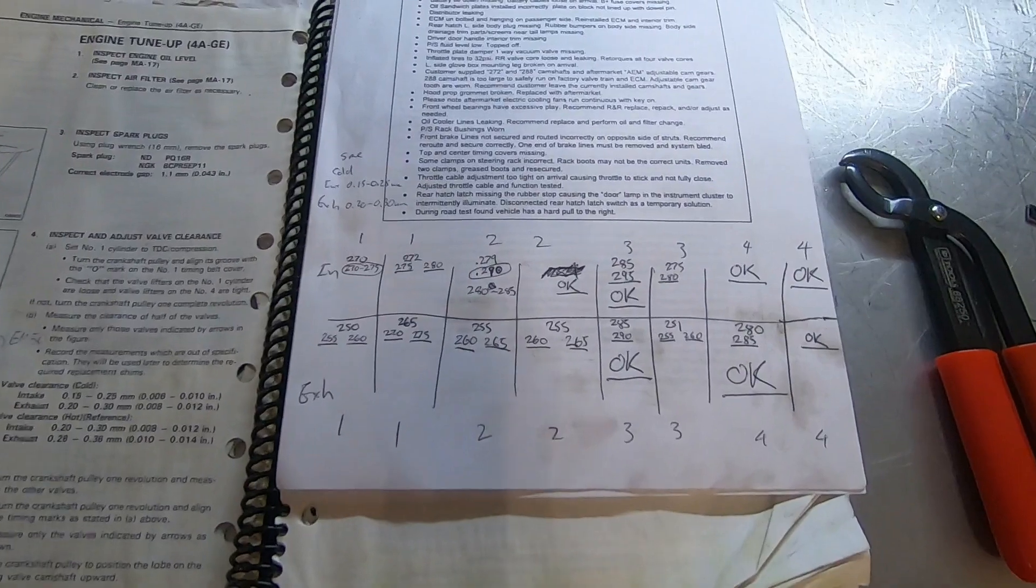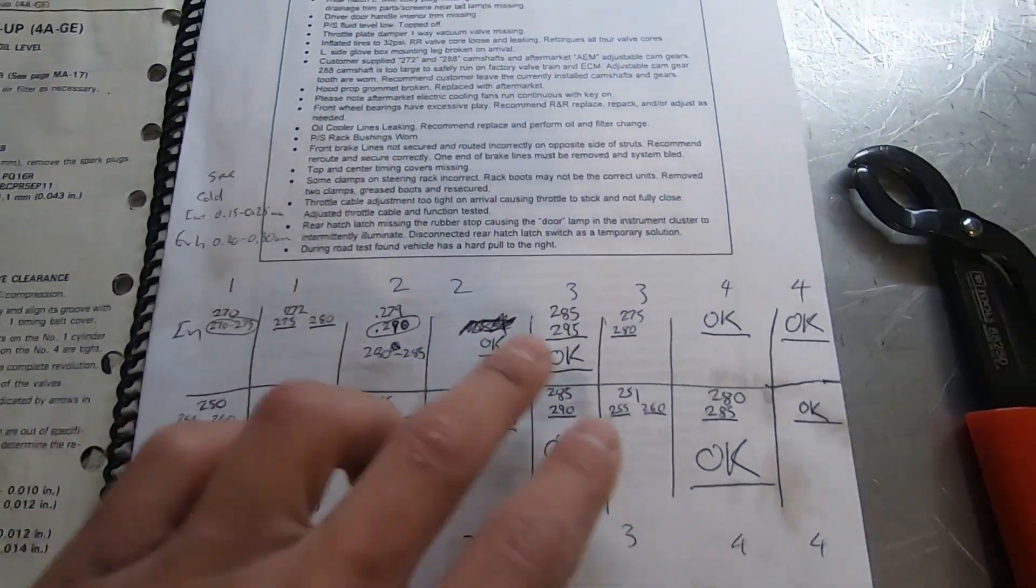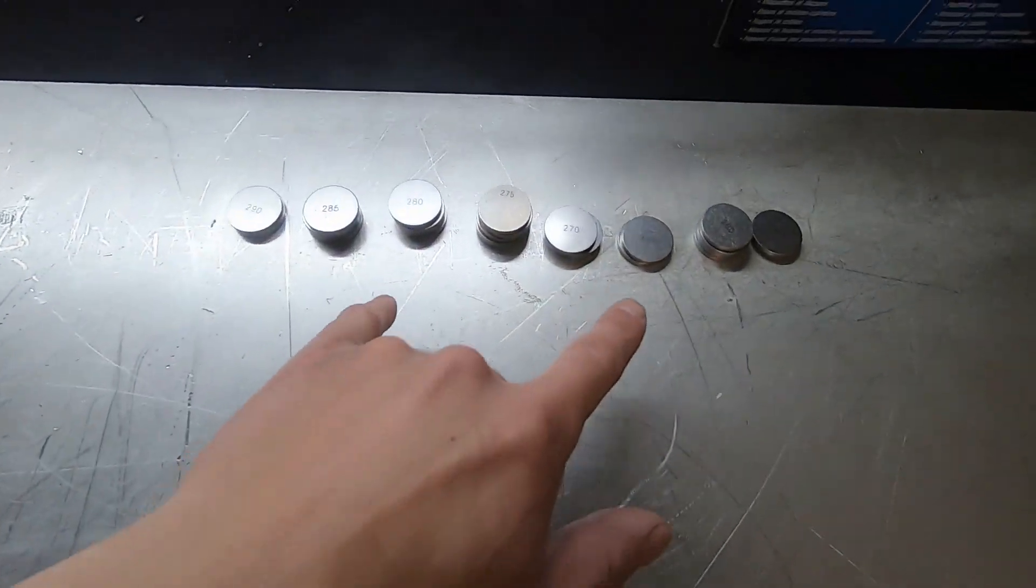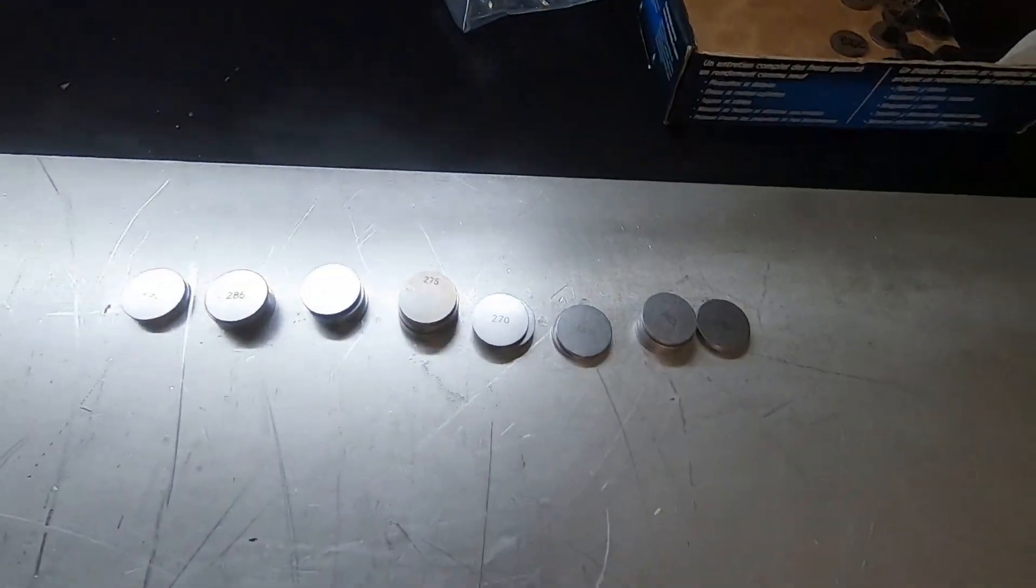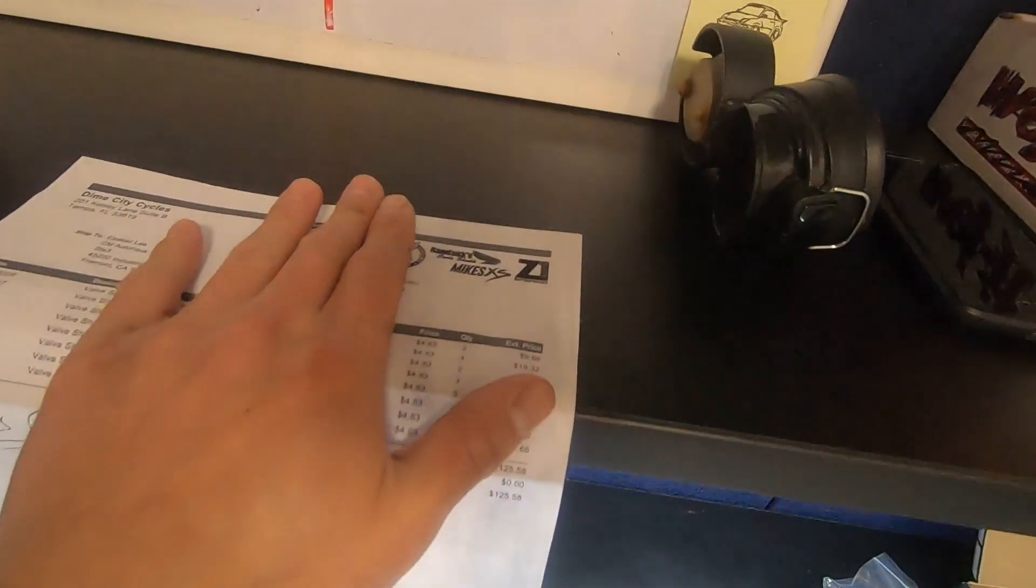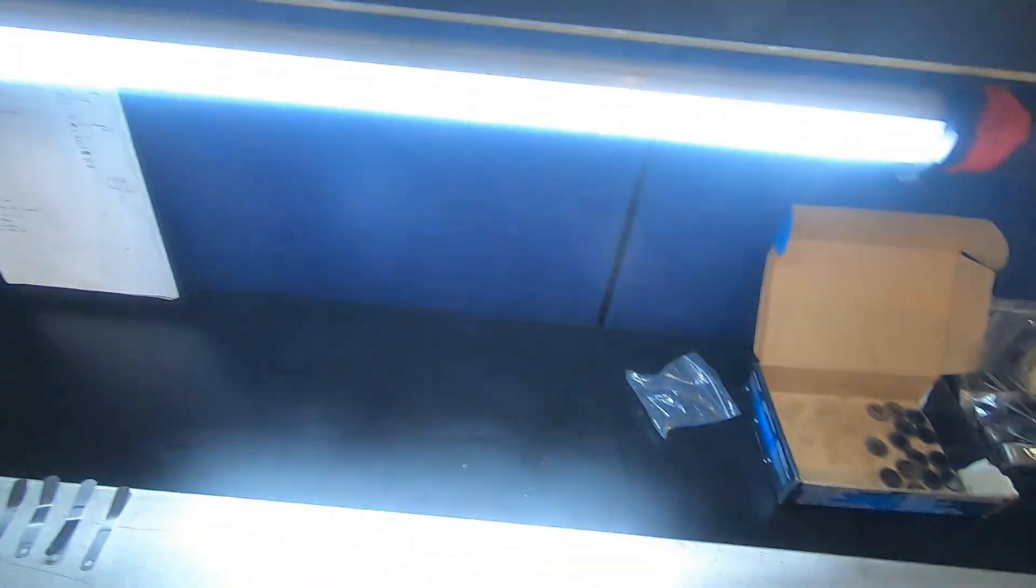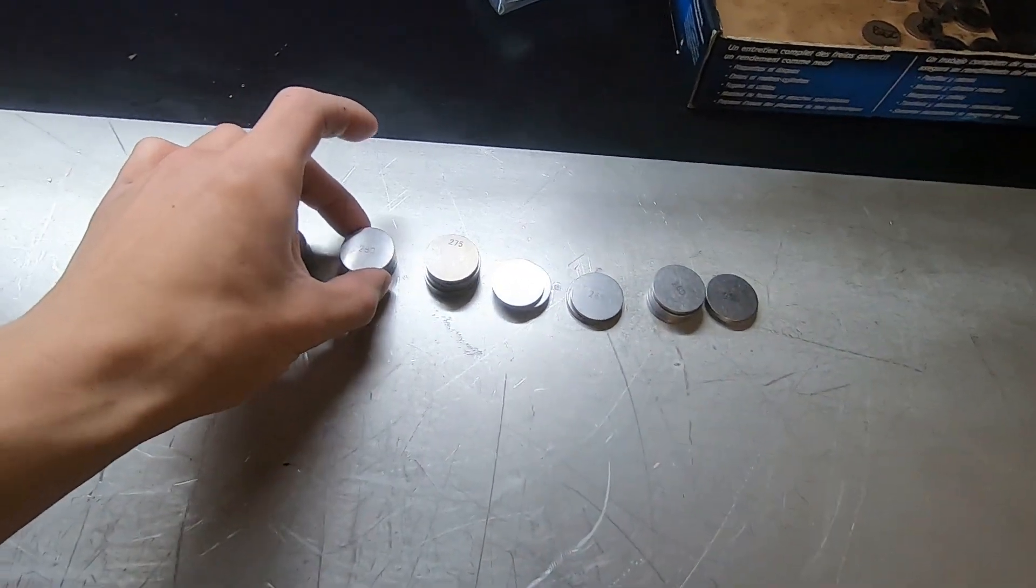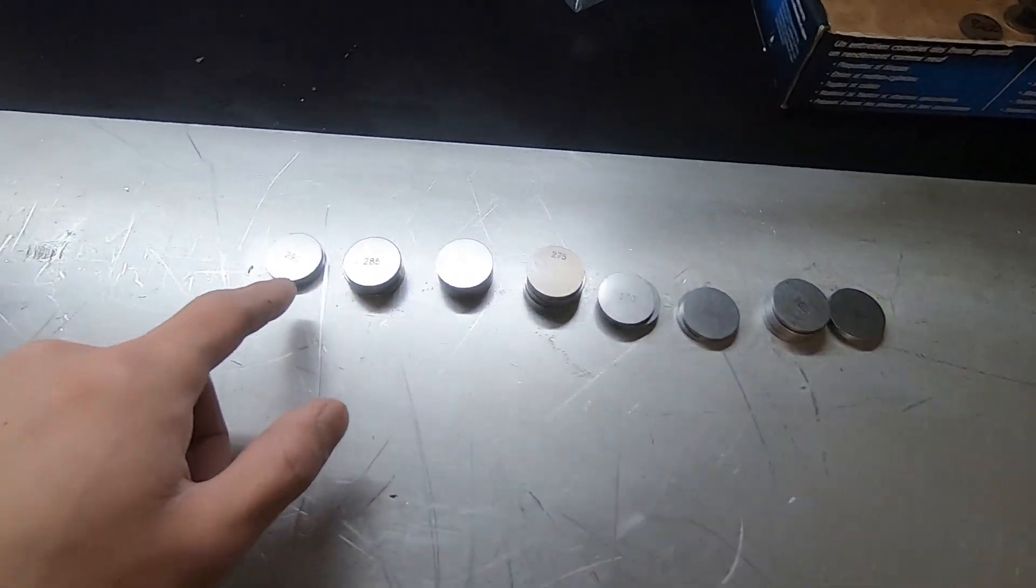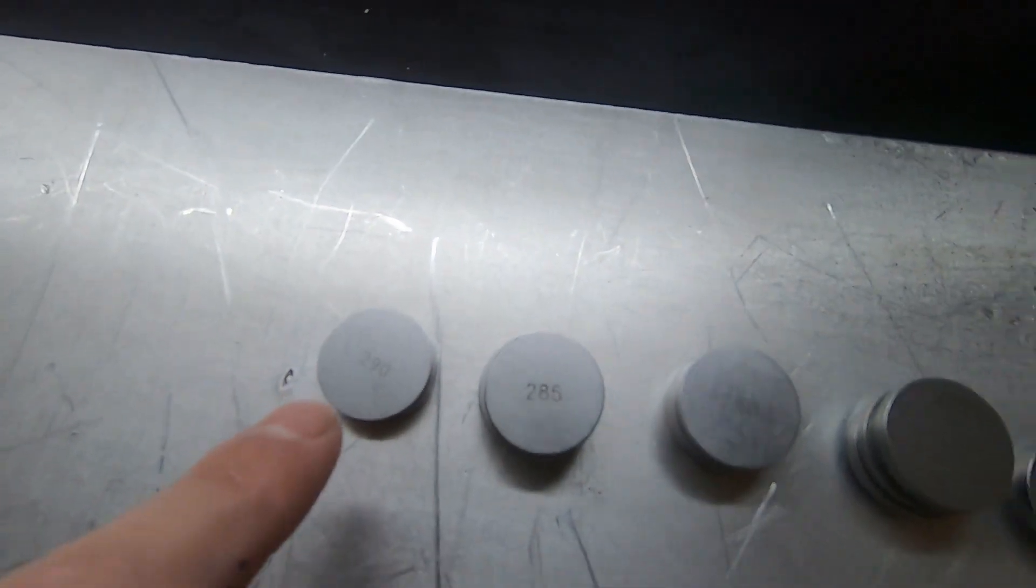I already checked the valve clearance last time, so here's some of my notes. Then we have a whole bunch of shims ready to go. Thank you to Z1 Enterprises. These are motorcycle shims that work for a car. They're just 25 millimeters and each of them come in different sizes. They sell them by the 5 mil differences: 290, 285, 280.